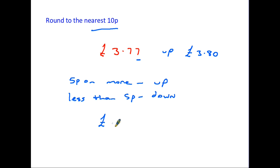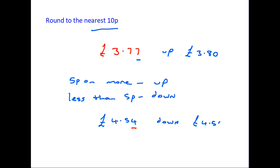Let's have a look at another amount: four pounds 54. Again rounding to the nearest ten pence, we look at the very last number — in this case it's a 4, which is less than 5p, so this one has to be rounded down. It becomes four pounds fifty pence to the nearest ten pence. So look at the last digit: if it's 5p or more, we go up to the next ten pence; if it's less than 5p, we go down to the nearest ten pence.